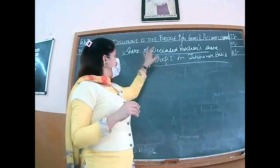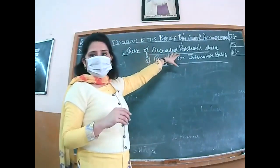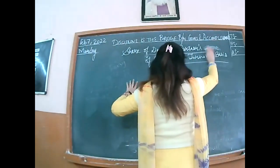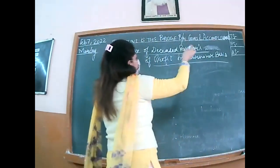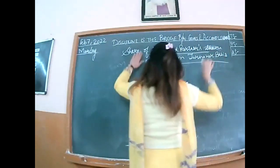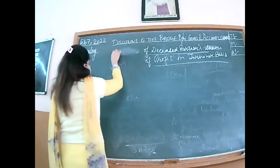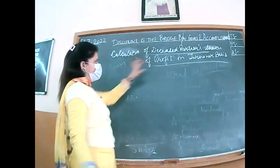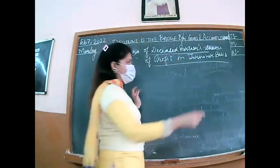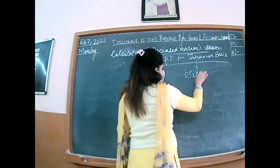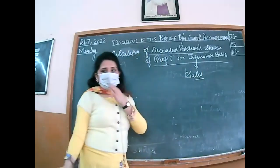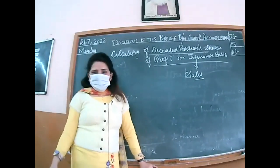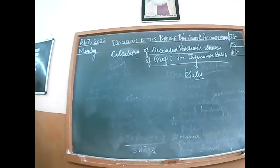Yes students, we were learning about the share of deceased partners' profit. This is the calculation of a deceased partner's share of profit on the turnover basis. Turnover basis means in these cases, he will be giving you sales. We will be calculating the firm's profit and then we will be calculating our deceased partner's share of profit. So let's see how it is being calculated.